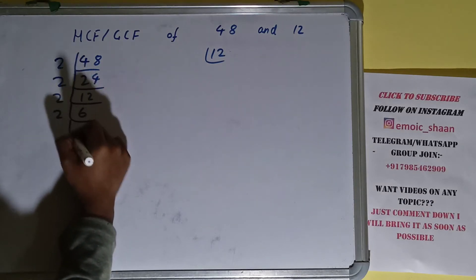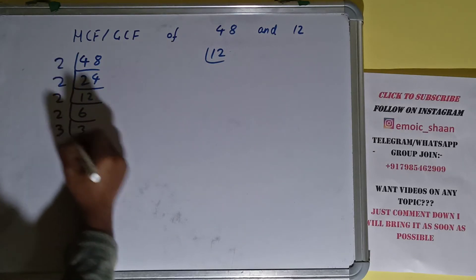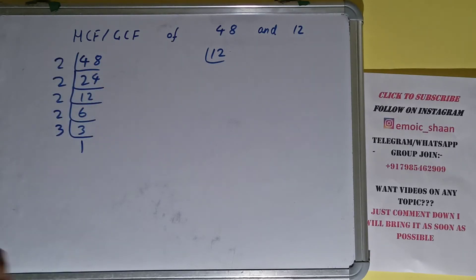Is 3 divisible by 2? No, 3 is a prime number so it is only divisible by itself and we'll have 1. So we are done with this. Now we need to do the same with the number 12.